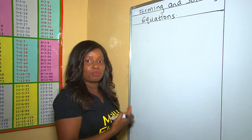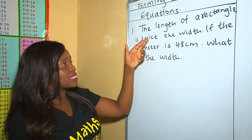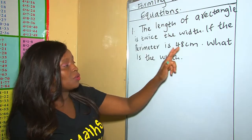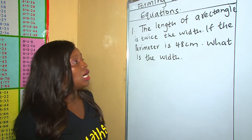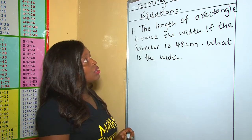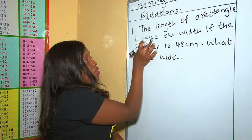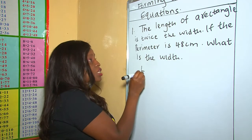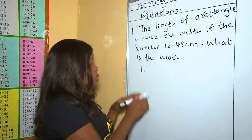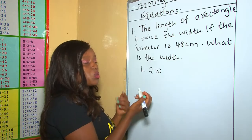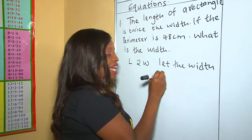This is different from algebraic expressions. Let's work out our first example. We are told that the length of a rectangle is twice the width. If the perimeter is 48 centimeters, what is the width? We need to identify the phrases used and the unknowns in that question. We are forming expressions and solving them. Since we don't know the width, we let the width be a letter like y.